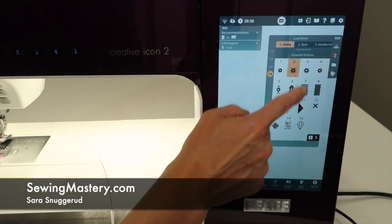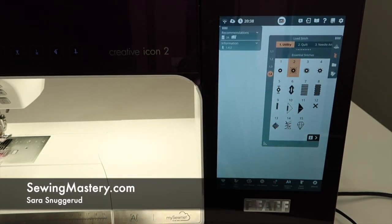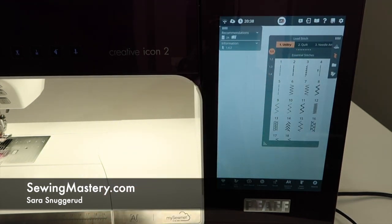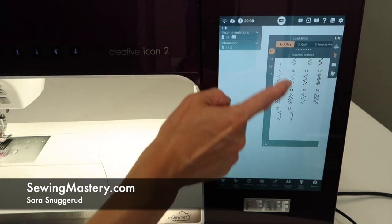We've just finished up working with the eyelets and the mending stitches on the Pfaff Creative Icon 2. Let's go ahead and do another utility type stitch. What if you needed to do a blind hem?